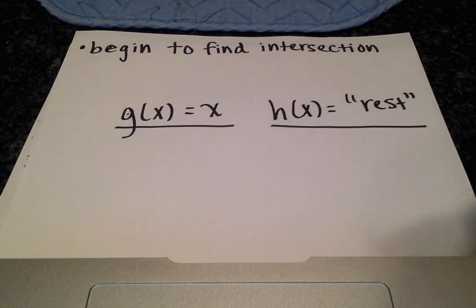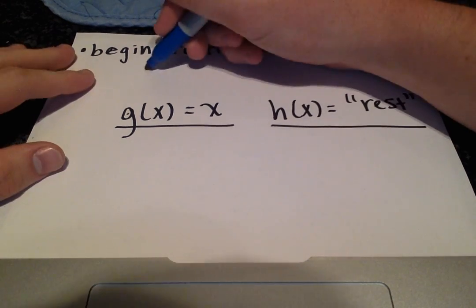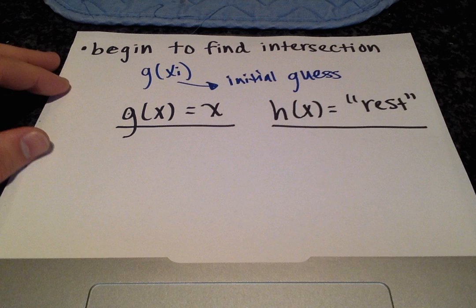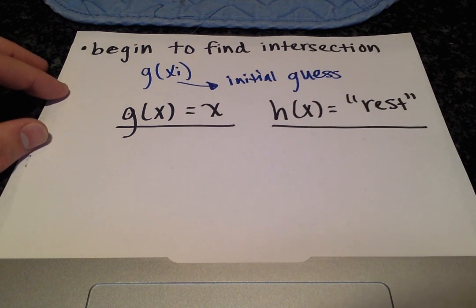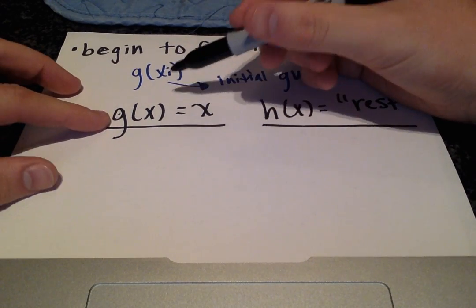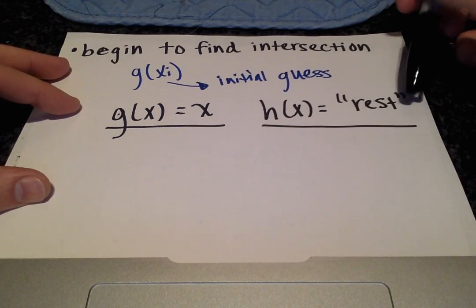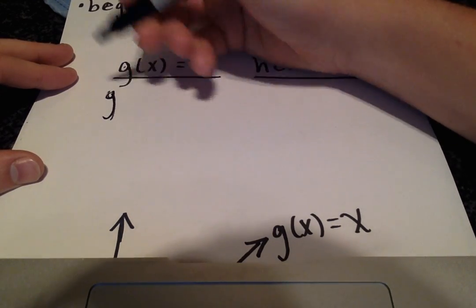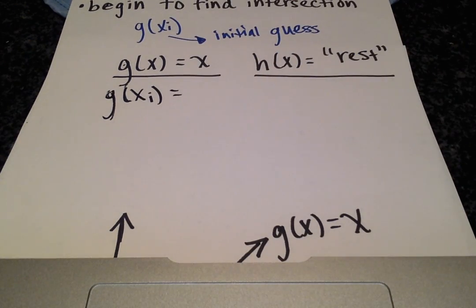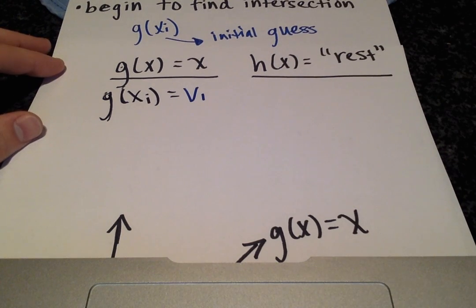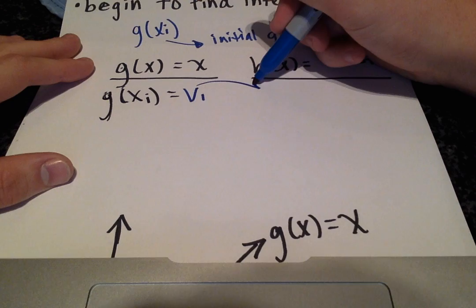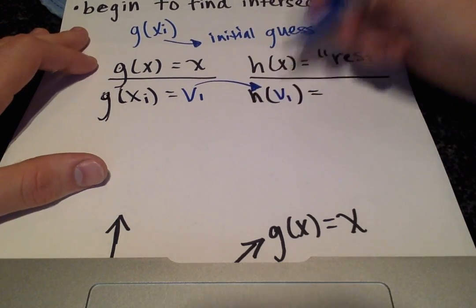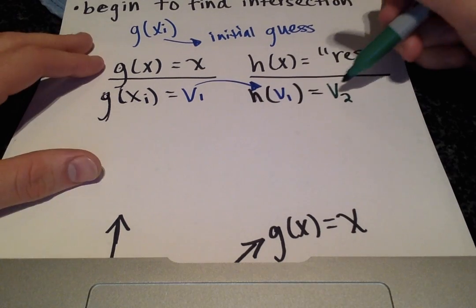How will we start this process? You'll start with g(x_i), where x_i is your initial guess. What I recommend doing is writing two columns: one with g(x) equals x, which will always be the case, and then h(x) equals the rest of your function. You'll start with g(x_i) and you'll get some value, I'll just use v1, and then what you'll do is plug that value into h(x). h(v1) will give you a new value.